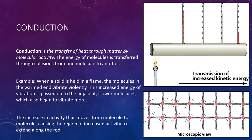Conduction is familiar to all of us. Anyone who has touched a metal spoon left in a hot pan has discovered that heat was conducted through the metal. Conduction is the transfer of heat through matter by molecular activity. The energy of molecules is transferred through collisions from one molecule to another, with heat flowing from higher to lower temperature. In the example shown, a solid is held in a flame — molecules in the warmed end vibrate violently, passing increased energy to adjacent, slower molecules, which also begin to vibrate more. The region of increased activity extends along the rod.